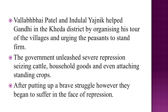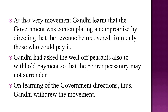The government unleashed severe repression, seizing cattle, household goods, and even attacking standing crops. After putting up a brave struggle, the peasants began to suffer in the face of repression. At that very moment, Gandhiji learned that the government was contemplating a compromise by directing that revenue be recovered from only those who could pay it. Gandhi had asked the well-off peasants also to withhold payment, so that the poor peasants may not surrender. On learning of the government's directions, Gandhiji withdrew the movement.